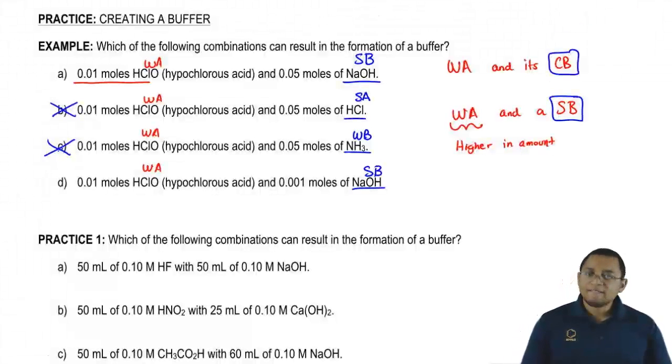In the first one, we actually have more moles of the strong species. So this would not be a buffer, this would actually destroy the buffer. But for the last one, we have more of the weak species than the strong species. So it would be the last one that makes a buffer.